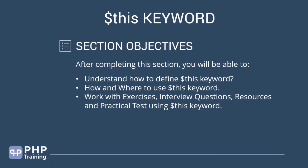The most important thing to understand is that $this is automatically available for us to use inside the class. We have seen previously that with $this you can access the properties and methods of the class. We will go deep down and understand how to work with this keyword. Let's jump into the section now.